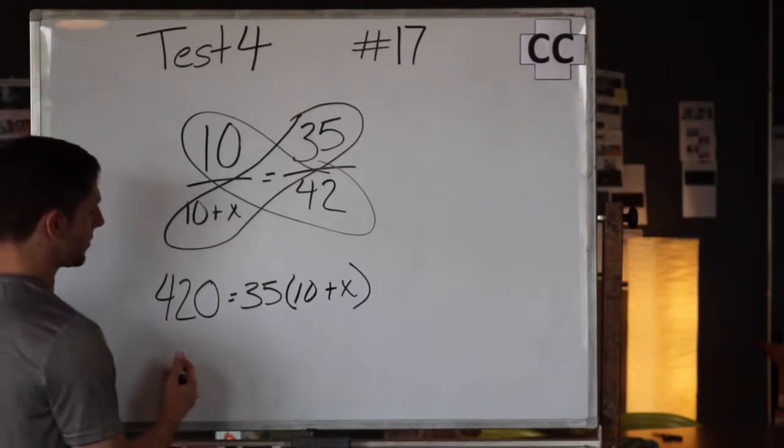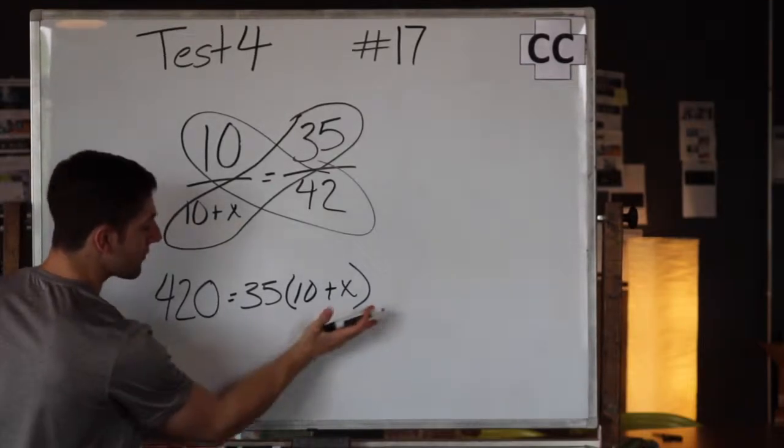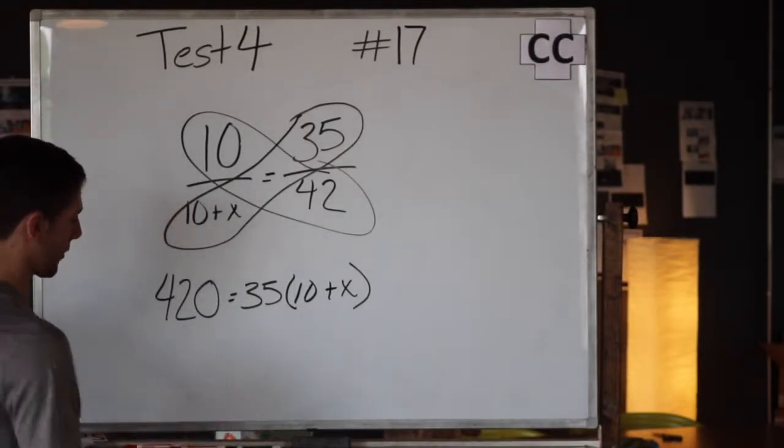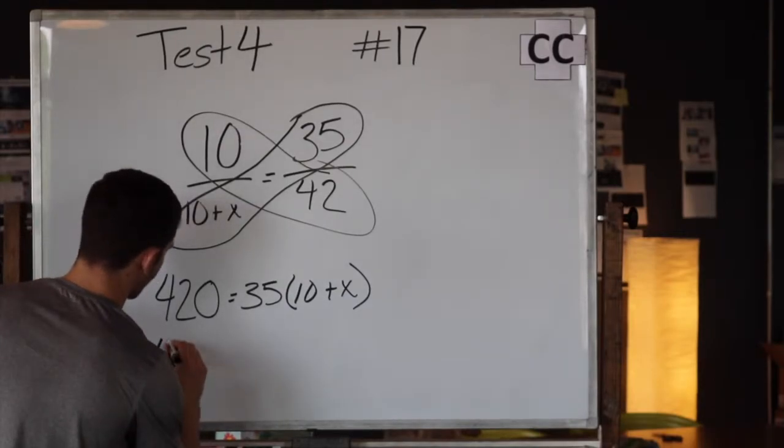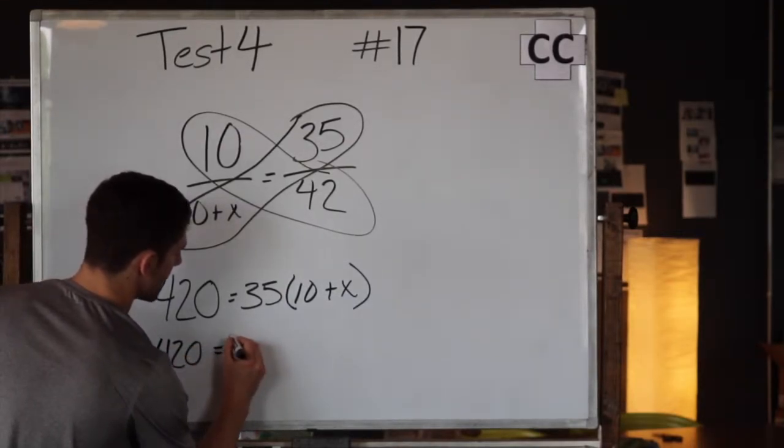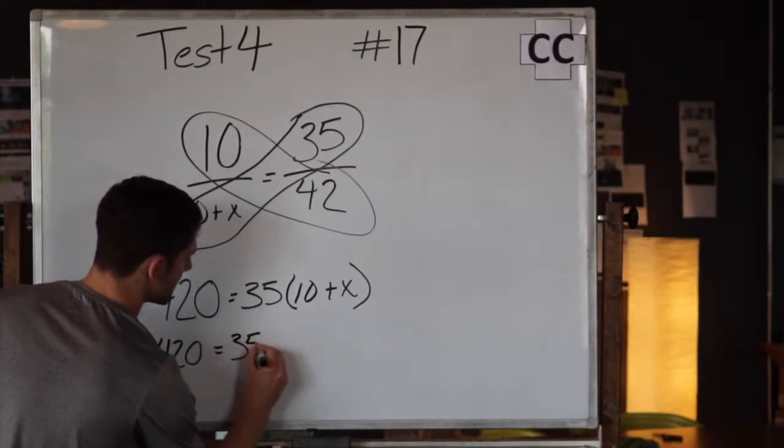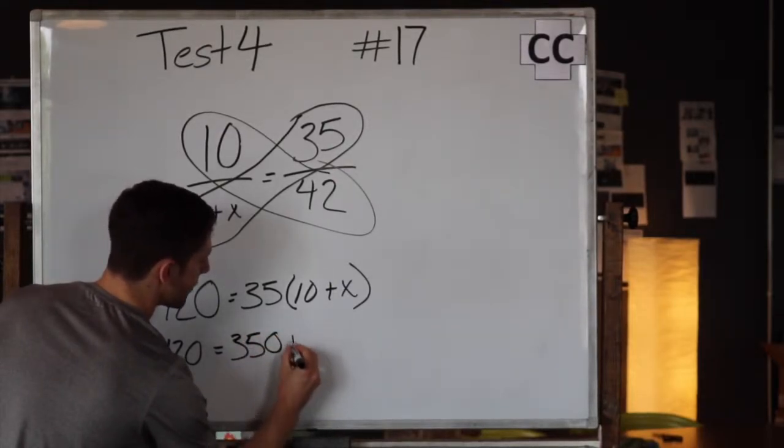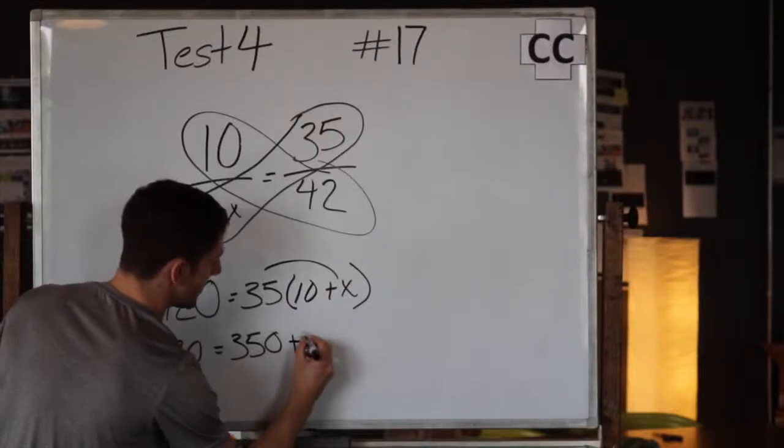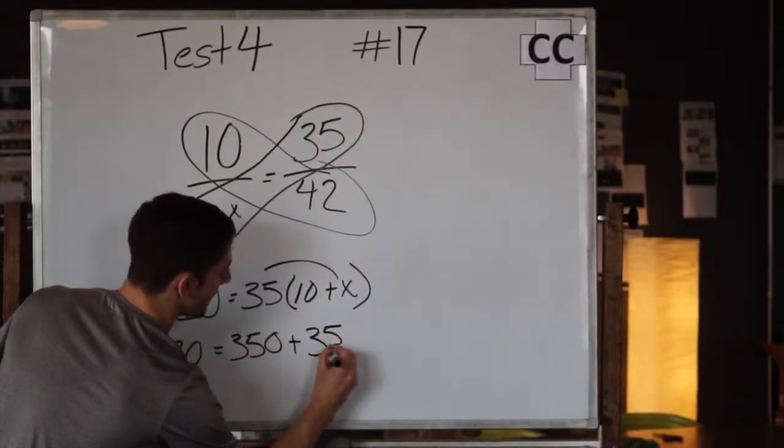So what we need to do now is solve this portion of the proportion. This is going to go 420 equals 35 times 10 is 350 plus 35 times x here. This becomes 35x.